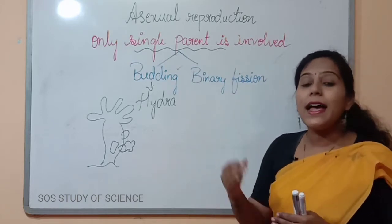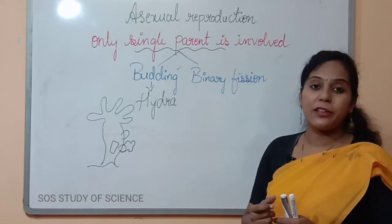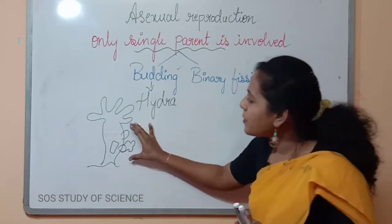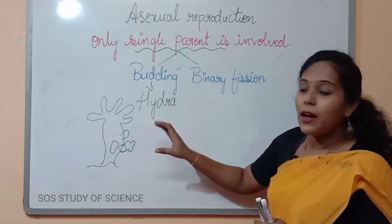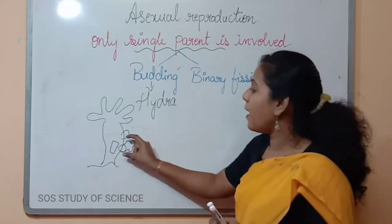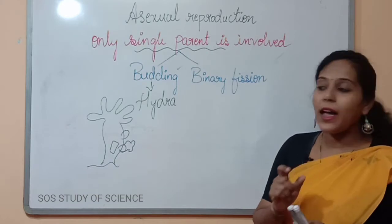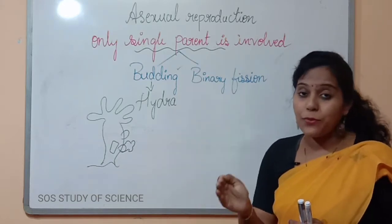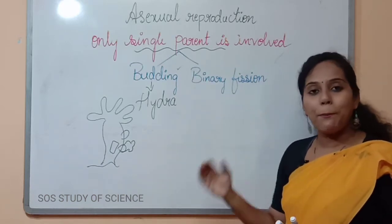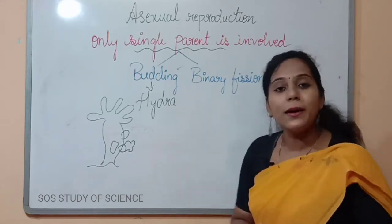How does the asexual mode of reproduction take place in the hydra? In the hydra, asexual reproduction takes place through budding. A bud develops on the surface of the hydra's body due to repeated cell division. A small outgrowth is seen on the body of the hydra — that is called a bud. Once it completely develops, it detaches from the body of the parent and grows itself as a new organism. That is all about budding.